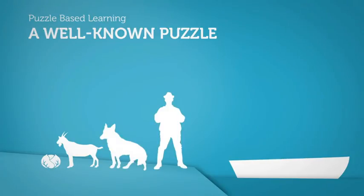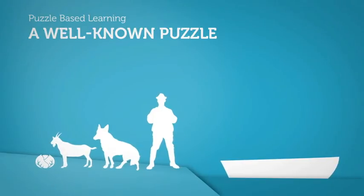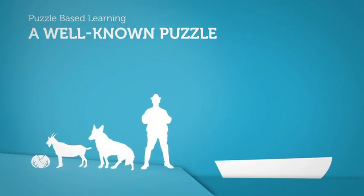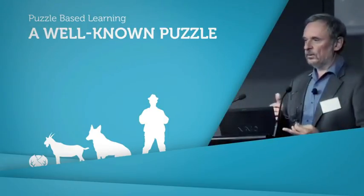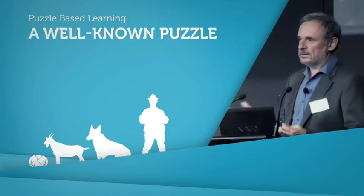So only when the farmer is with them, he can prevent the disaster. And the question is how this can be done. Which items should be taken to the boat and delivered on the other side and so on.